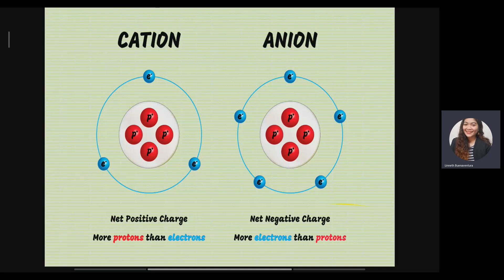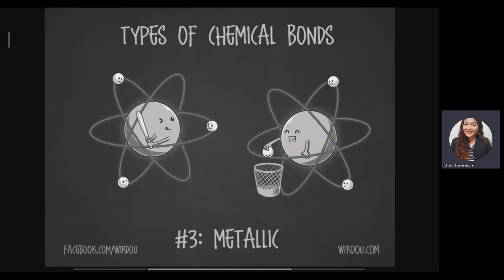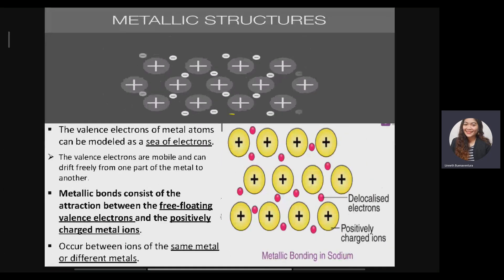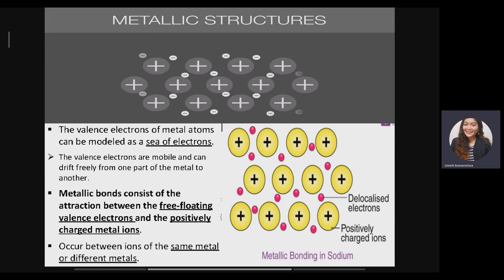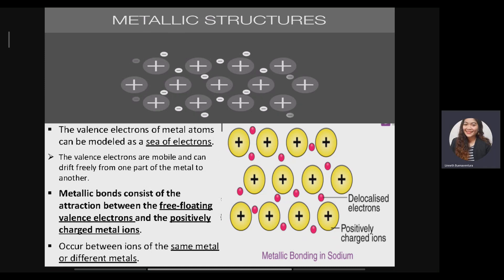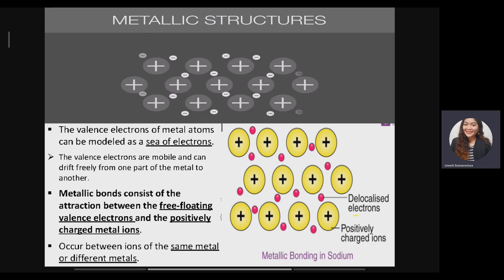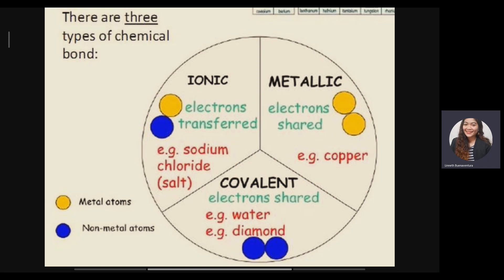Next is metallic bond. Metallic bond is the bond between two metal elements. The valence electrons of metal atoms can be modeled as a sea of electrons, as shown here. The valence electrons are mobile and can drift freely from one part of the metal to another. Metallic bond consists of the attraction between free-floating valence electrons and positively charged ions. This can occur between the same metal or different metals.